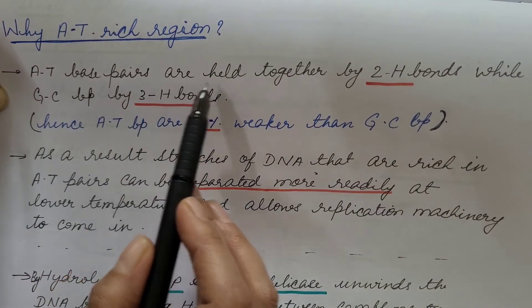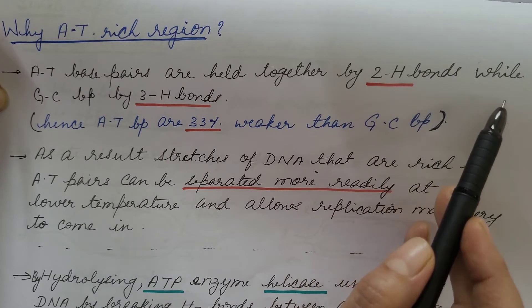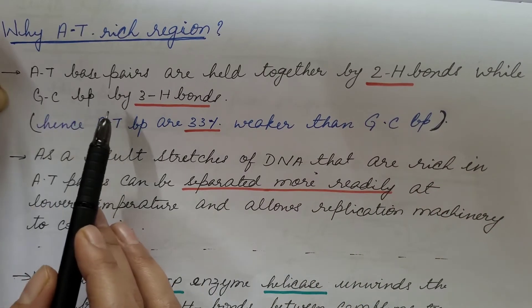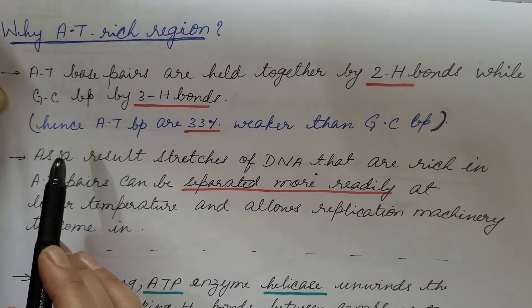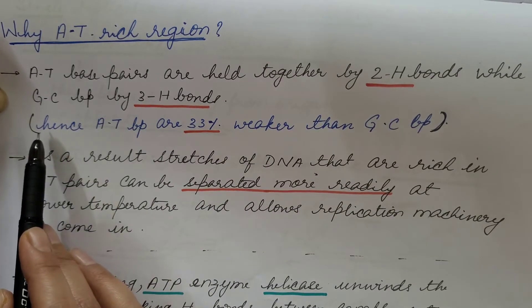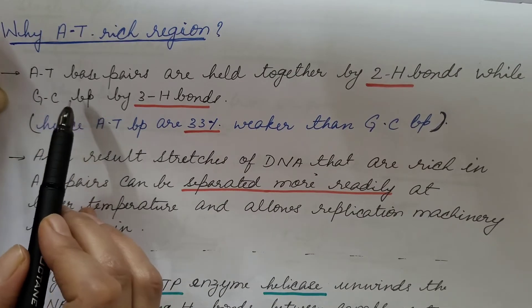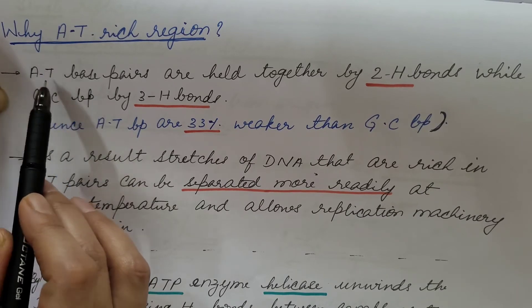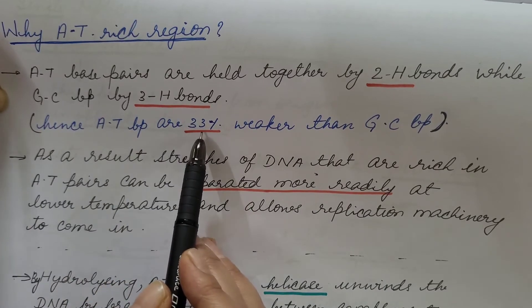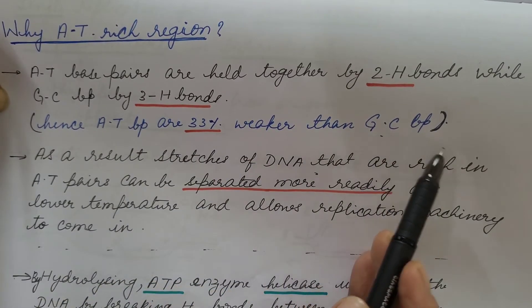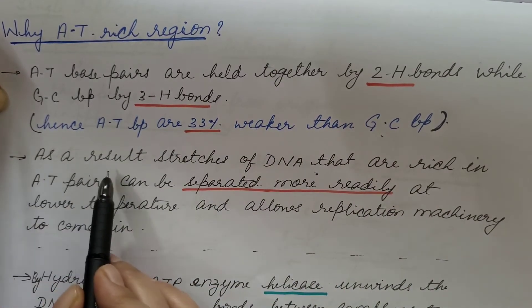AT base pairs are held together by 2 hydrogen bonds while GC base pair by 3 hydrogen bonds. This we have discussed earlier. Hence, GC base pair has stronger bond compared to AT base pairs or in other words, AT base pairs are 33% weaker than GC base pair.